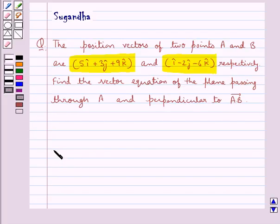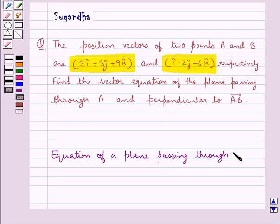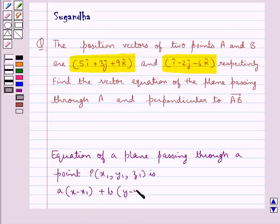We have the equation of a plane passing through a point P with coordinates x1, y1, z1 is A into x minus x1 plus B into y minus y1 plus C into z minus z1 equal to 0